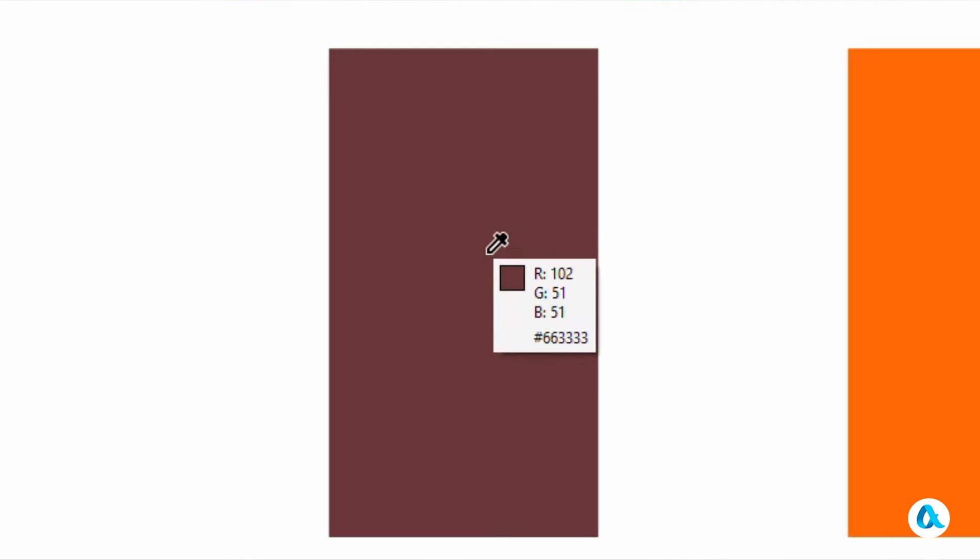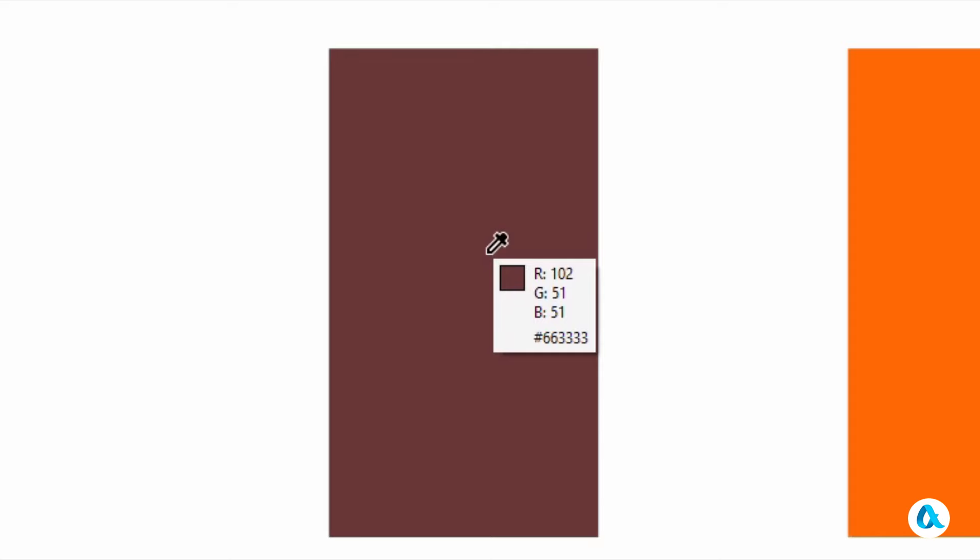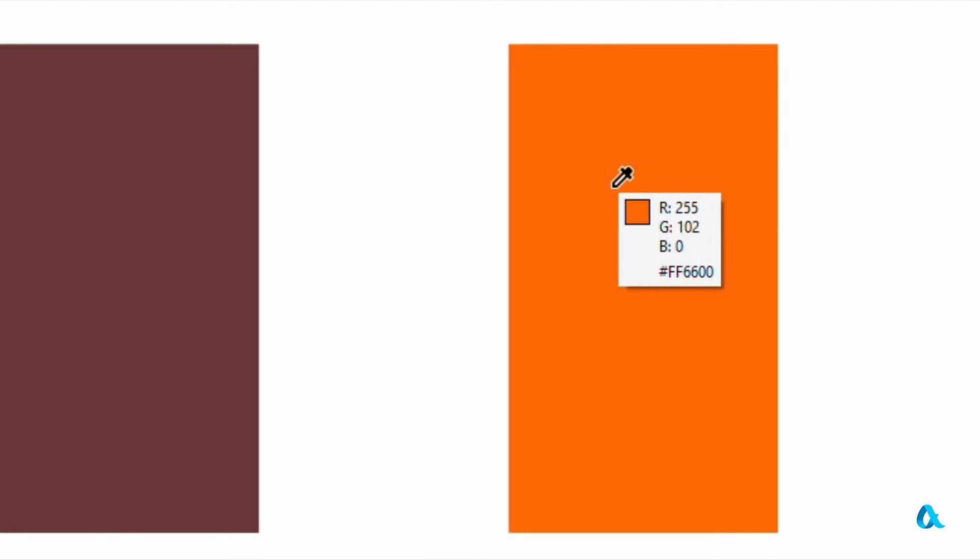Now let's see what coordinates the colors in the bottom row have. The coordinates of this brown are 102, 51, 51. In it, red is set to 40% of its full brightness, while green and blue are set to 20%.